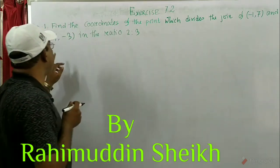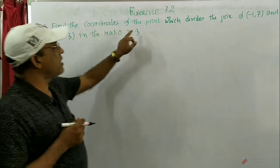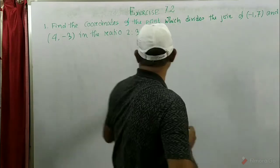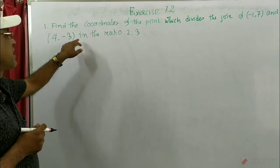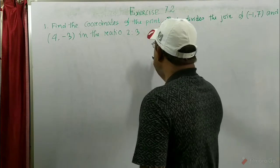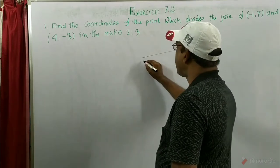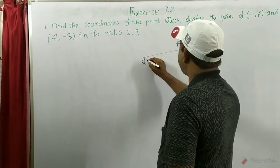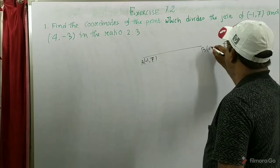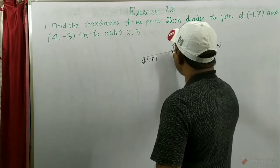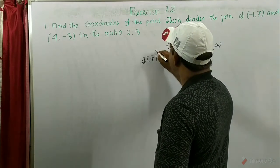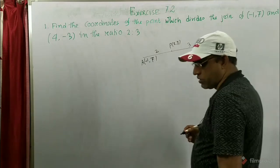Now here is the given problem: find the coordinates of the point which divides the join of (-1, 7) and (4, -3) in the ratio 2 is to 3. First we want to draw the figure. So the point A is given as (-1, 7), B is given as (4, -3), and here we get the point P(x, y), and this point P divides this line segment in the ratio 2 is to 3.